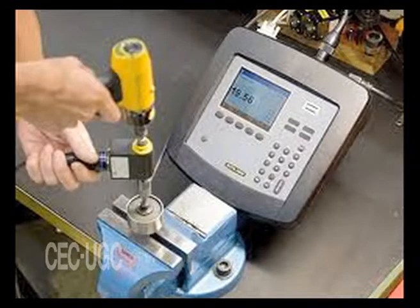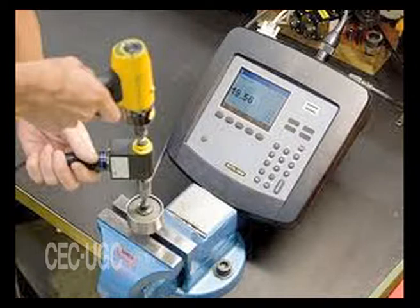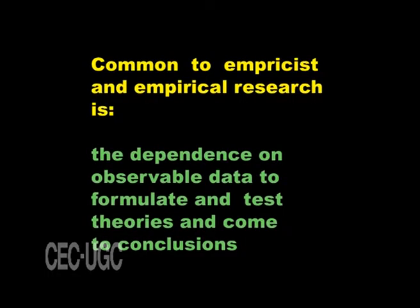In scientific use, the term empirical refers to the gathering of data using only evidence that is observable by the senses or, in some cases, using calibrated scientific instruments. What early philosophers described as empiricist and empirical research have in common is the dependence on observable data to formulate and test theories and come to conclusions.